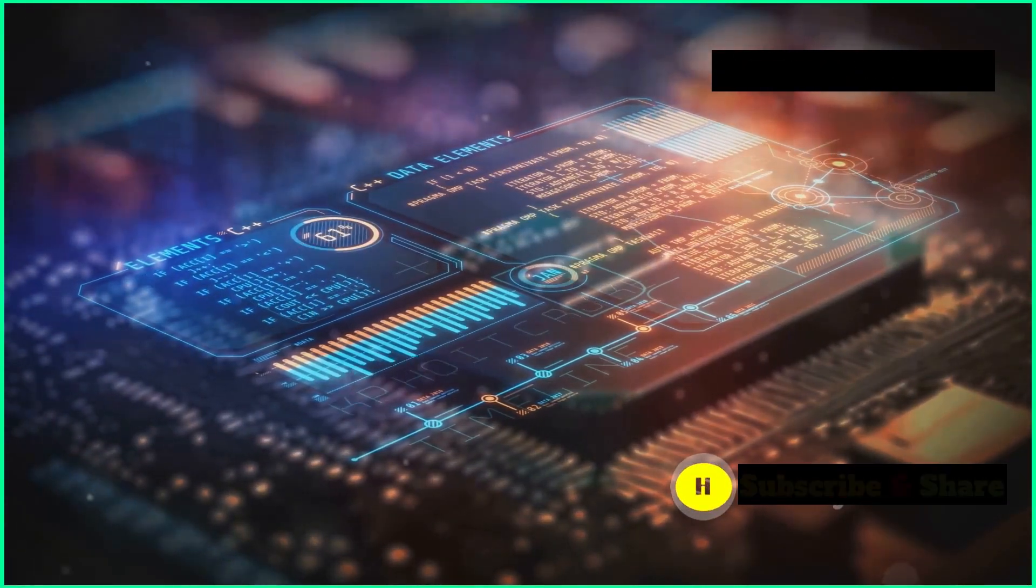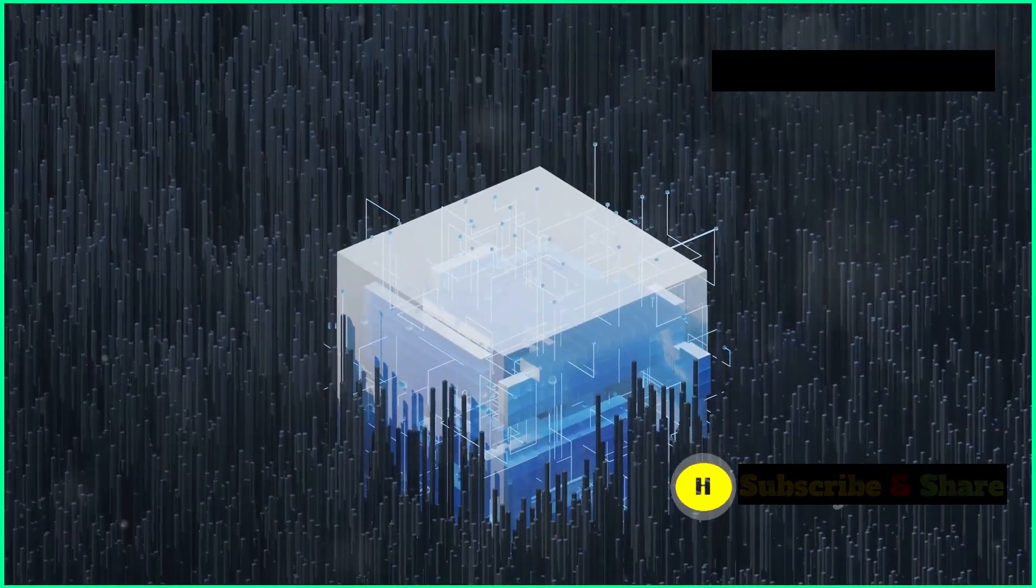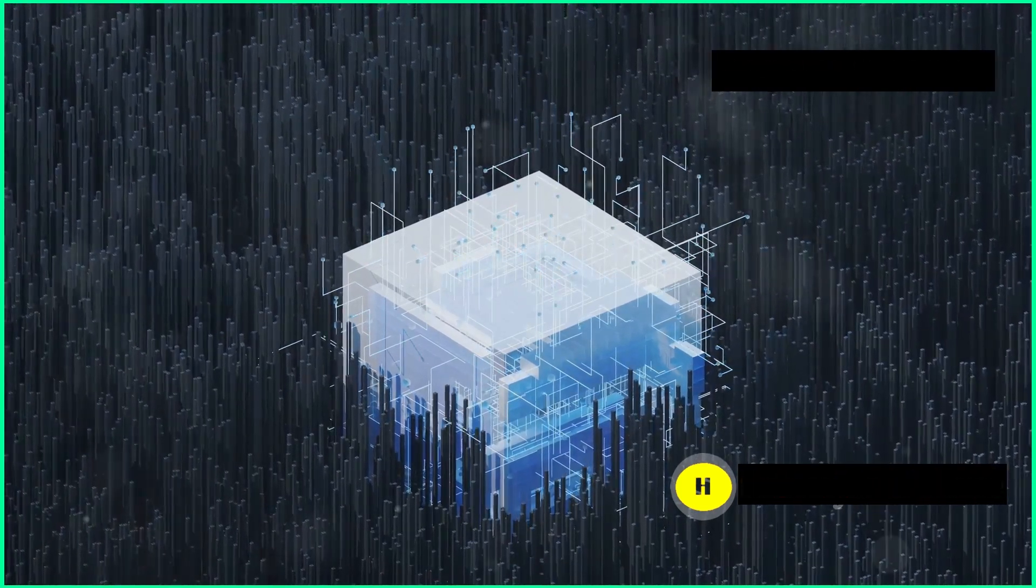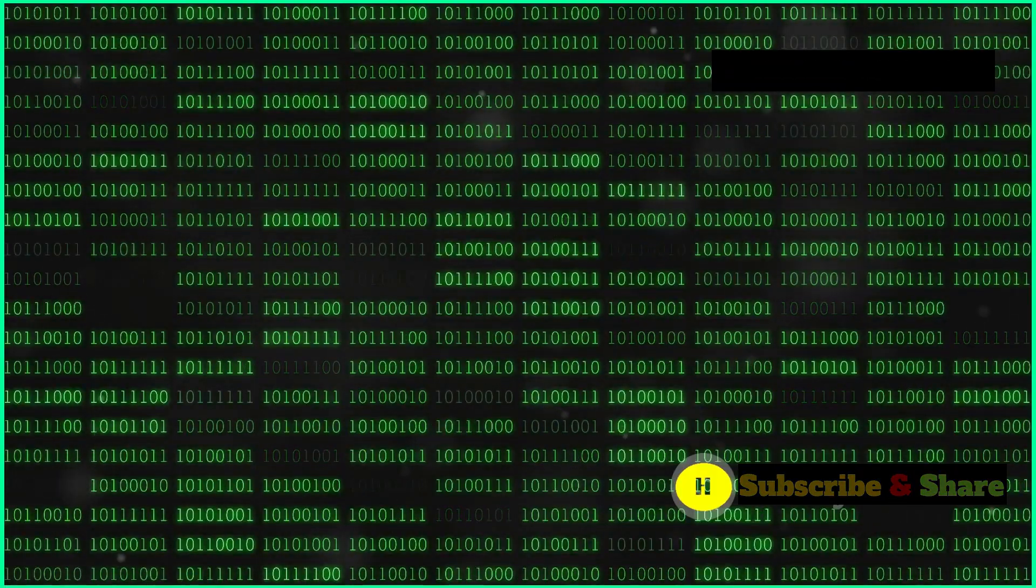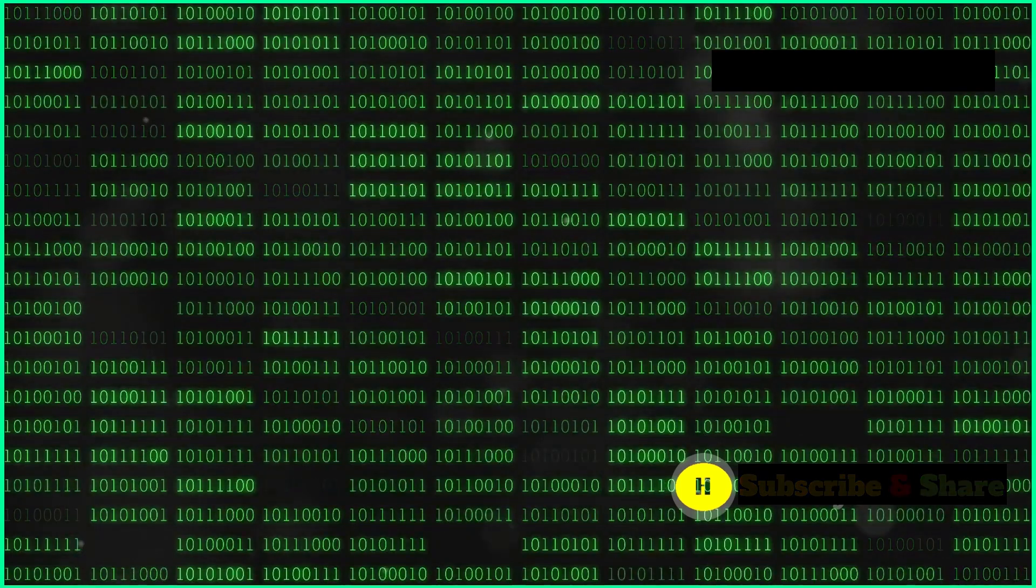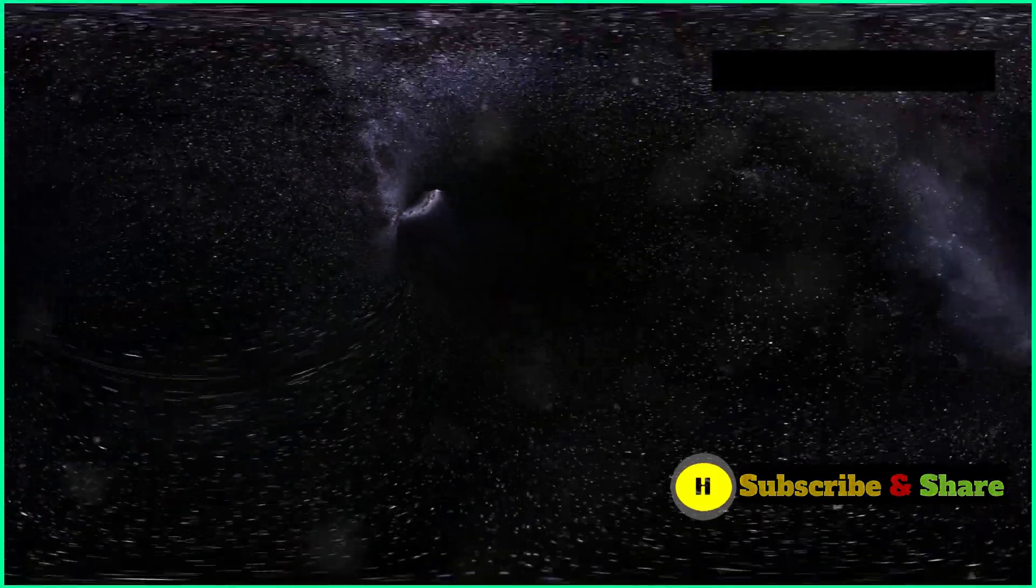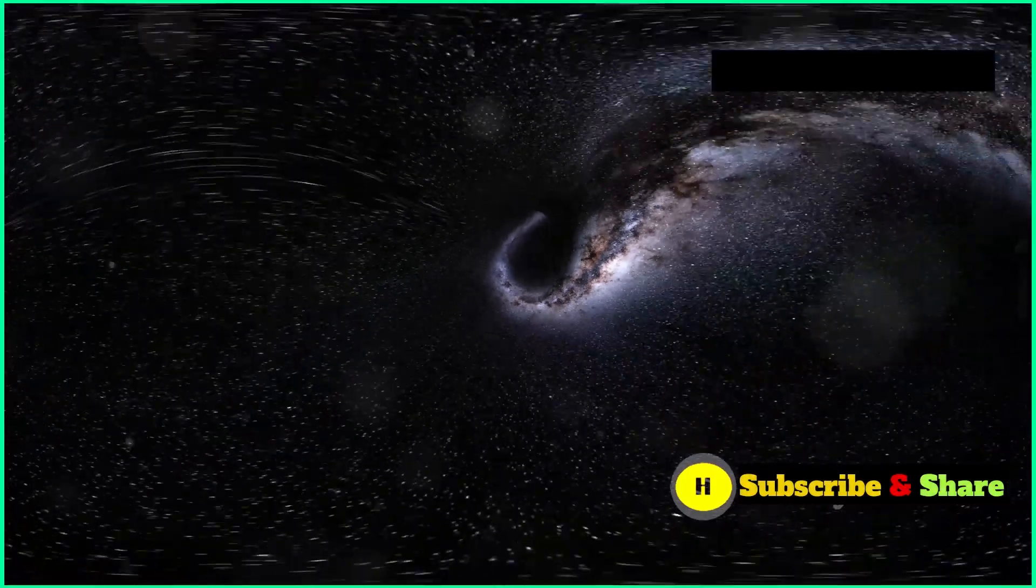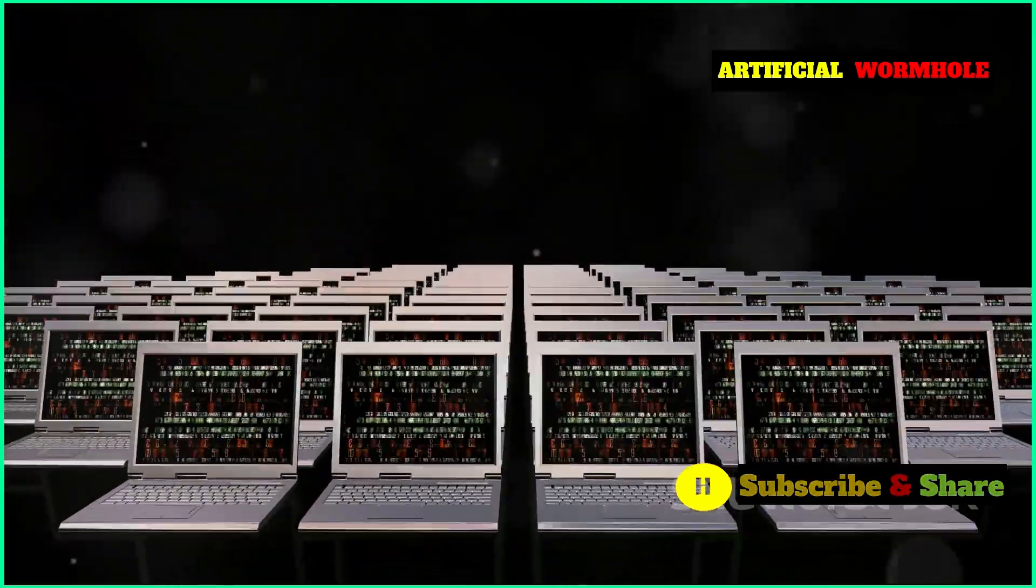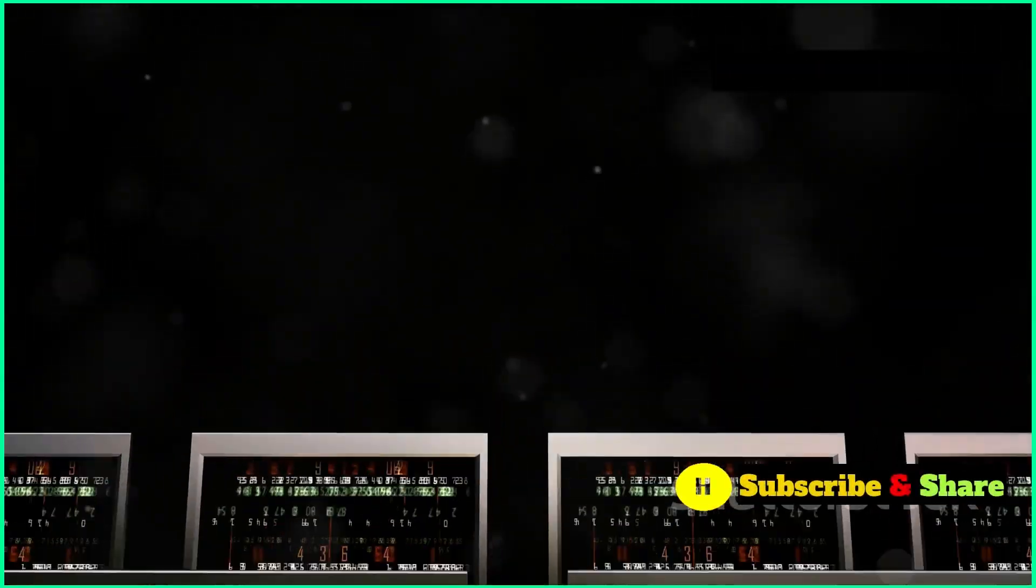Now let's meet the star of the show: Google's Sycamore quantum processor. This technological marvel operates on the principles of quantum mechanics, harnessing the strangeness of the quantum world to perform complex calculations. Unlike classical computers that rely on bits, quantum computers use qubits. Qubits take advantage of the quantum phenomenon of superposition, allowing them to exist in a combination of states, both zero and one simultaneously. This unique feature gives quantum computers a significant advantage in tackling problems that are practically impossible for classical computers to solve.